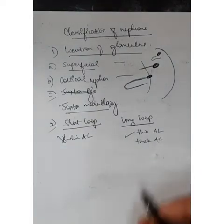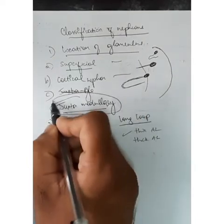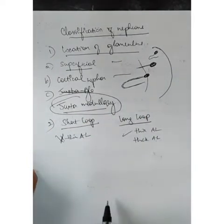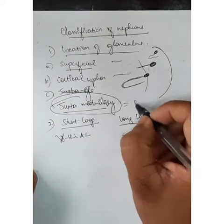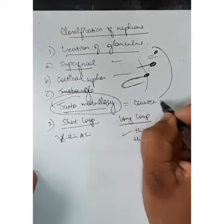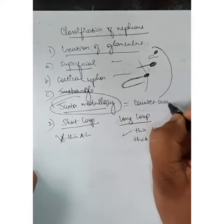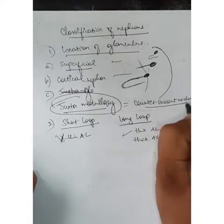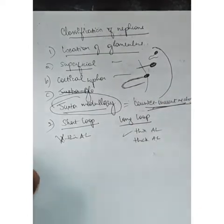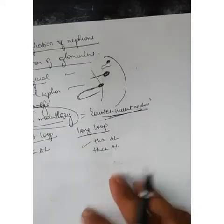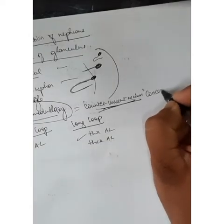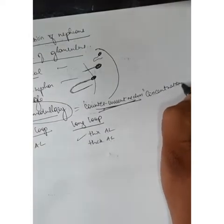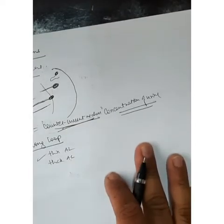Juxtamedullary nephrons are important because the counter-current mechanism occurs in these nephrons, which is most important in the concentration of urine. We will see what is meant by concentration of urine in future classes.